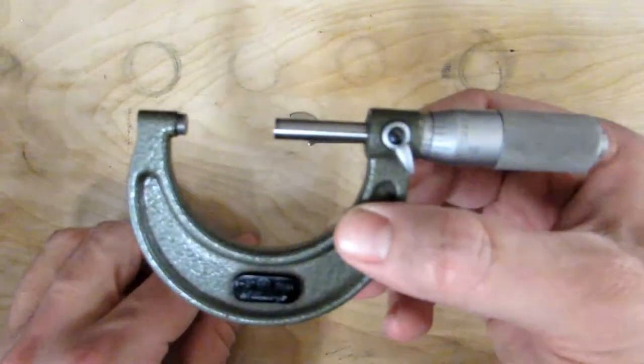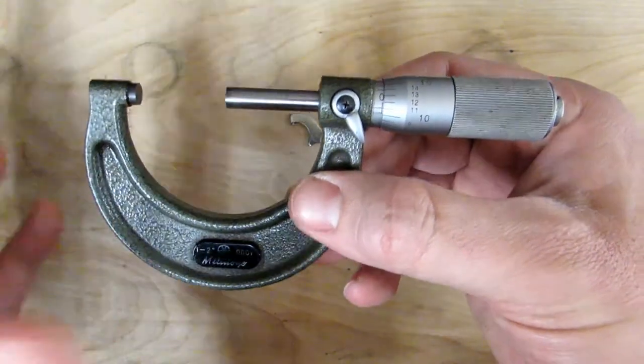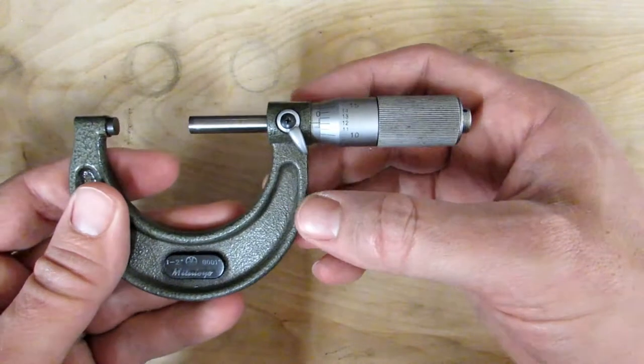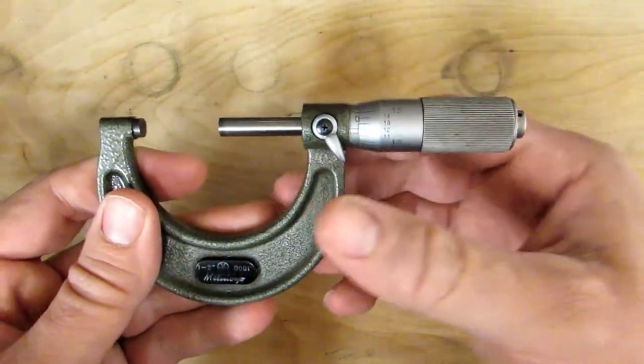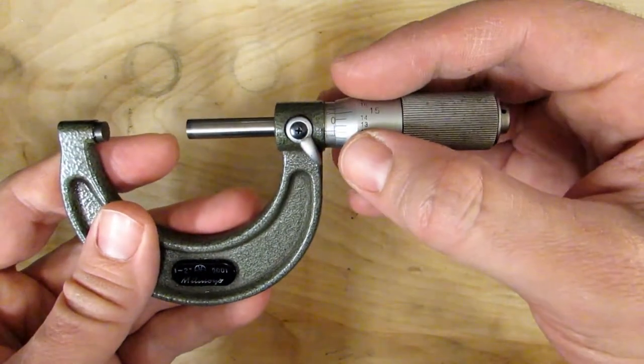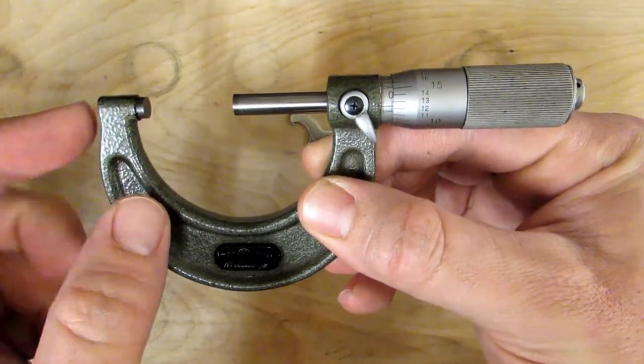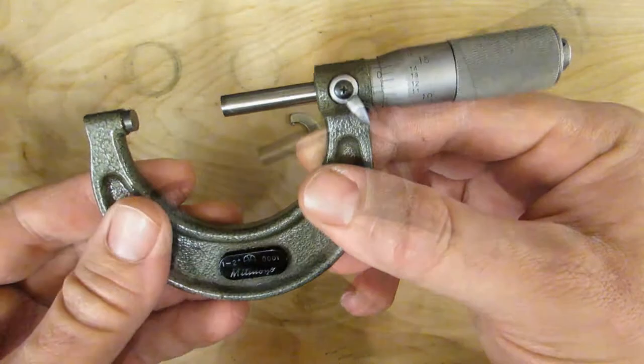Now the same basic process is used for larger micrometers too, whether it's a 1 to 2 inch mic like this or a 24 to 25 inch mic. It doesn't matter. You're still going to use the same process. The only difference is you can't clean these by closing them on a sheet of paper. They don't go down that far.